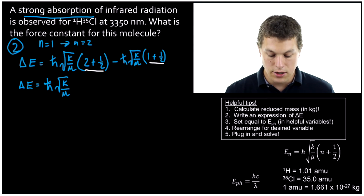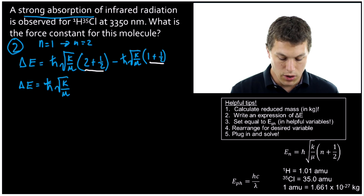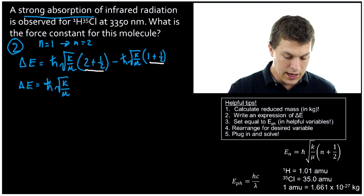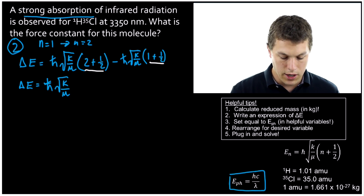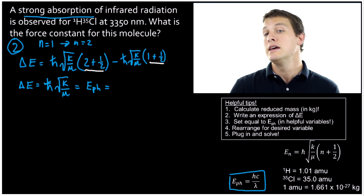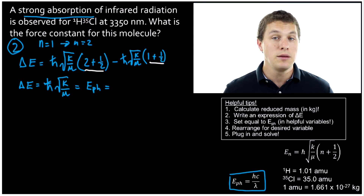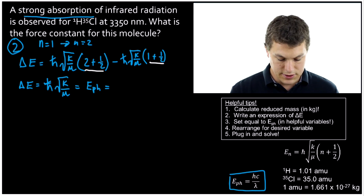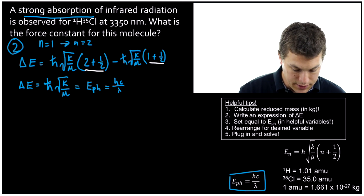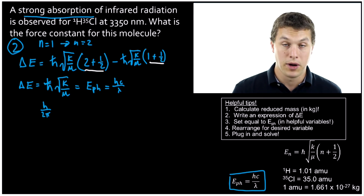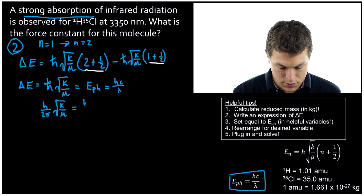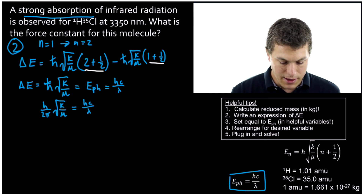The next thing we're going to do is set the energy of our photon equal to the change in energy. The energy of our photon is hc/λ, regardless of what form the light information is given in. So our equation becomes h-bar × √(K/μ) = hc/λ. Because we have both h and h-bar, I'm going to rewrite h-bar as h/2π — that way the h's will cancel, which simplifies the algebra.